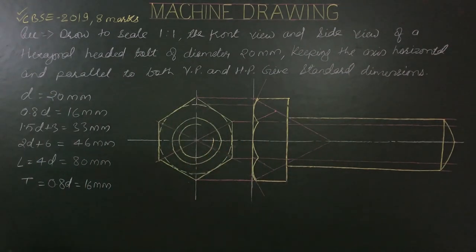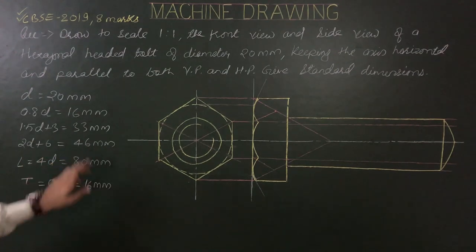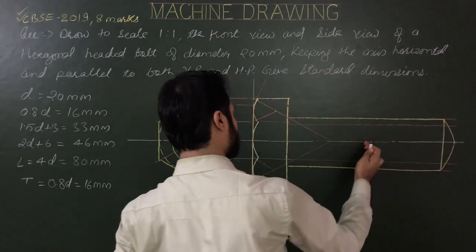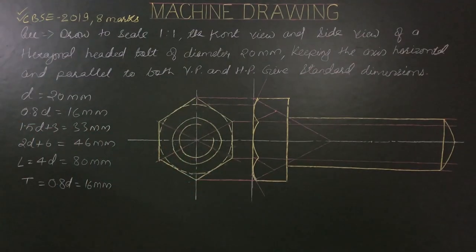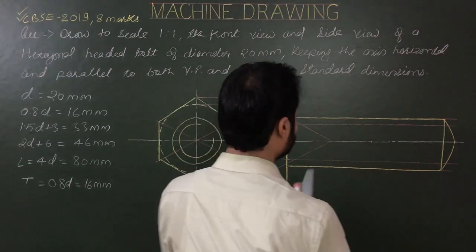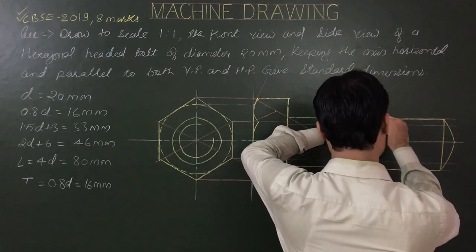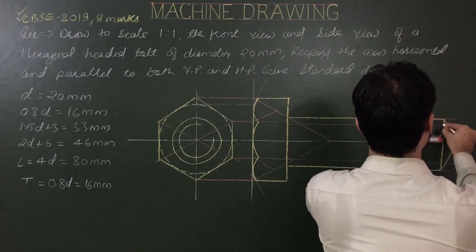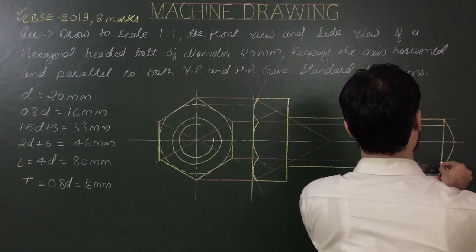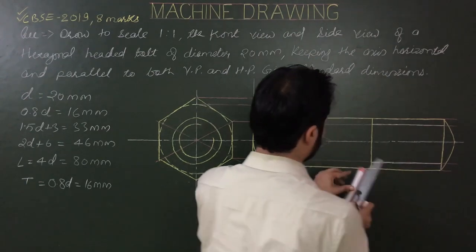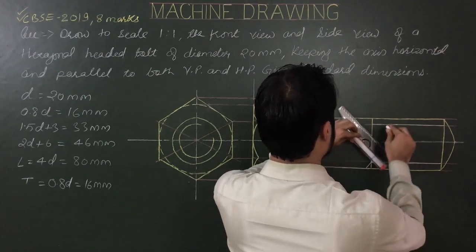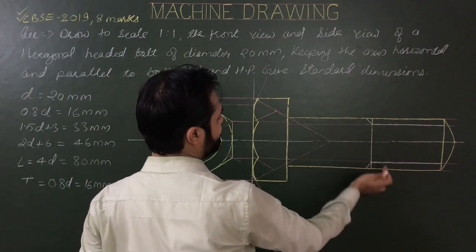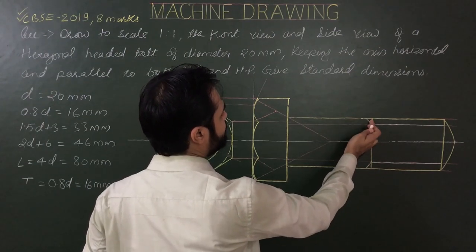The threaded length is 2D + 6 = 46mm. Mark this limit from the last end. From this point, draw a vertical line perpendicular to the central axis and show the limits of the minor diameter up to this line using a medium-dark pencil. Draw the two other lines from the starting points to intersect this line at an angle of 45°.